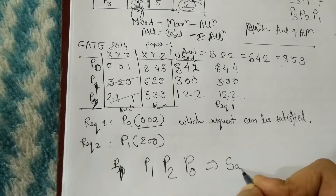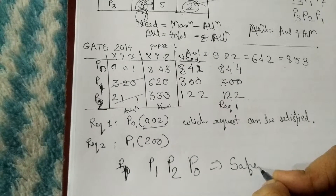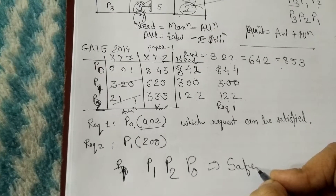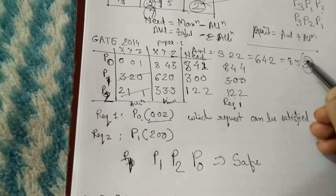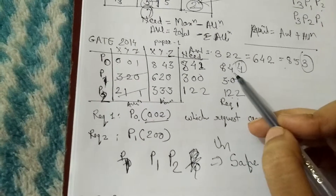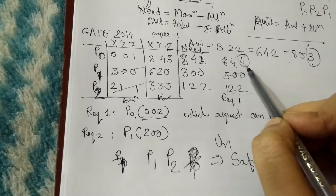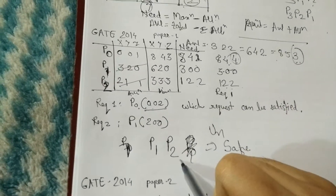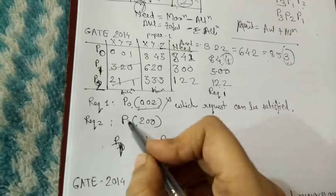Now for Request 1, the available is 3 but we require 4 to satisfy the need of P0. Since available (3) is less than the need (4), we cannot satisfy P0's need, so the system will be in an unstable state and this request cannot be granted.